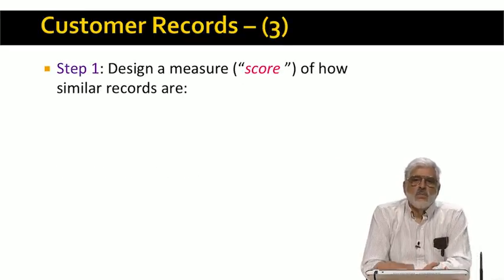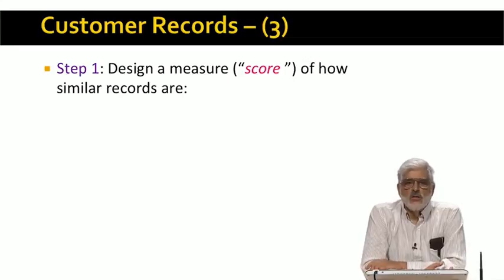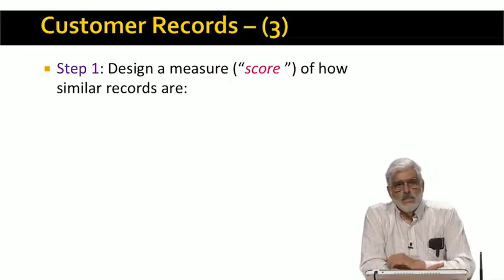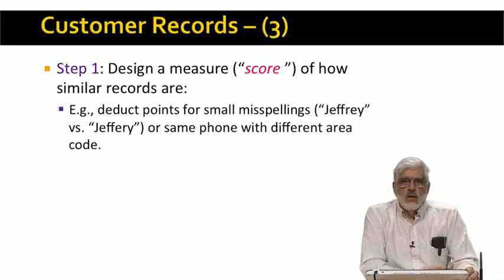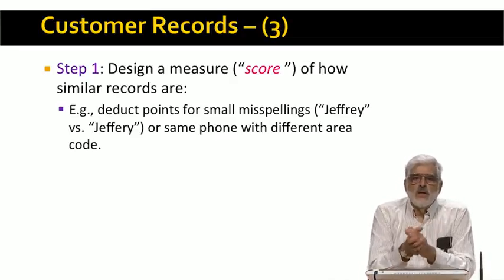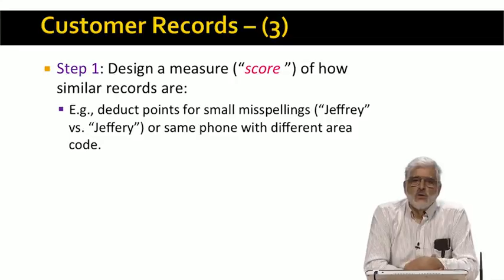Our first step was to devise a measure of how similar records were. We gave 100 points each for identical names, addresses, and phone numbers, so 300 was the top score. Interestingly, only 7,000 pairs of records received this top score, although we identified over 180,000 pairs that were very likely the same person. Then we penalized differences in these three fields. Completely different names, addresses, or phones got zero score, but small changes gave scores close to 100.